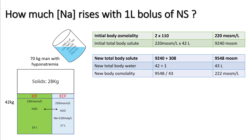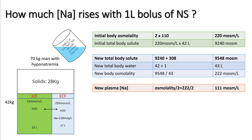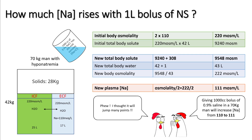When you give one litre of saline, you add 308 mOsm of sodium chloride and one litre of water. New total body solute becomes 9,548 mOsm and new total body water is 43 litres. Dividing these gives 222 mOsm/L, so the new plasma sodium is 111 mEq/L. One litre of normal saline in a 70 kg person raises sodium only from 110 to 111 — not a large change.